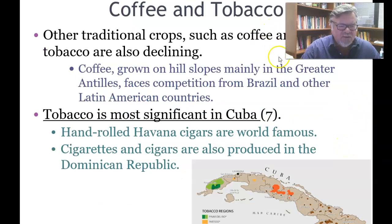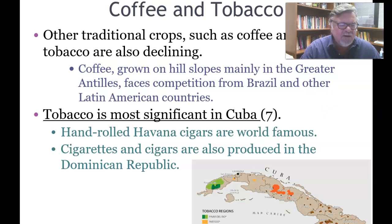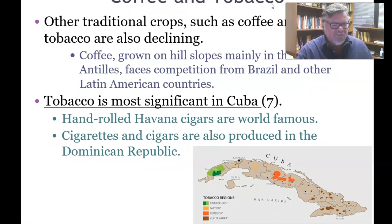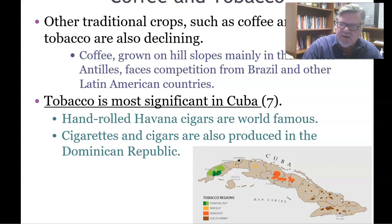Other traditional crops such as coffee and tobacco are also declining. Coffee is best grown on hill slopes, mainly in the Greater Antilles — for example Cuba — but faces stiff competition from Brazil, Colombia, and Costa Rica. Tobacco is most significant in Cuba. Hand-rolled Havana cigars are world famous, and cigarettes and cigars are also produced in the Dominican Republic. Some of the best cigars are now produced in Nicaragua by Cubans who moved there after the Cuban Revolution.